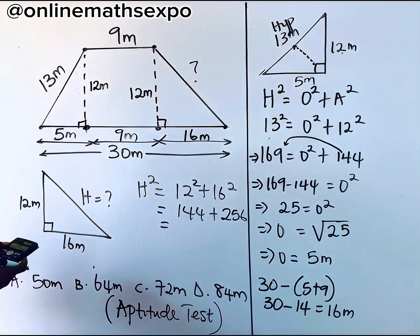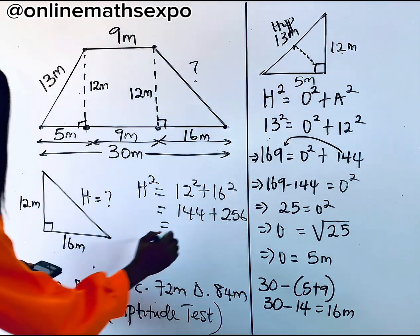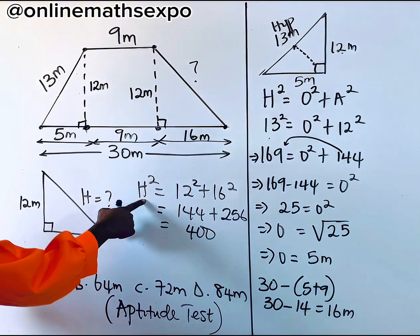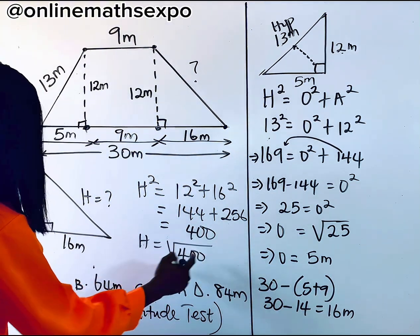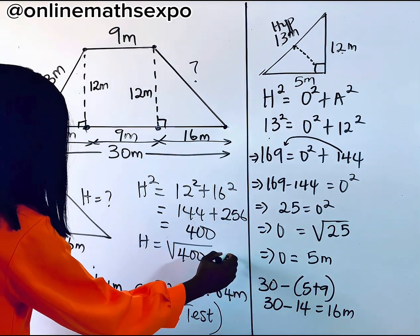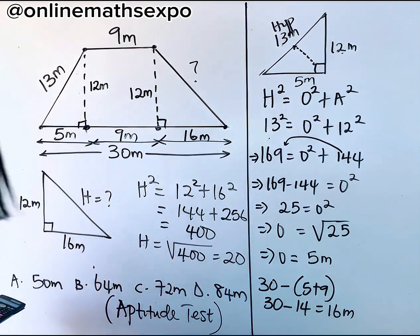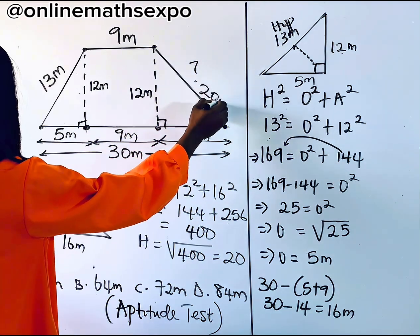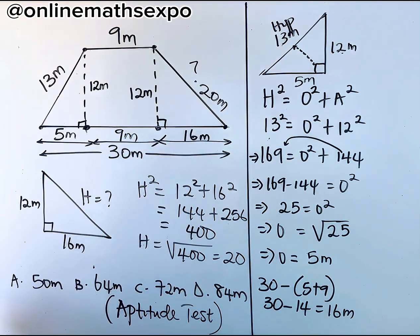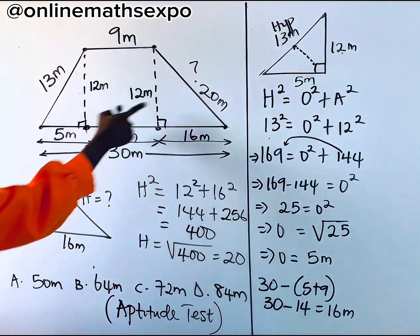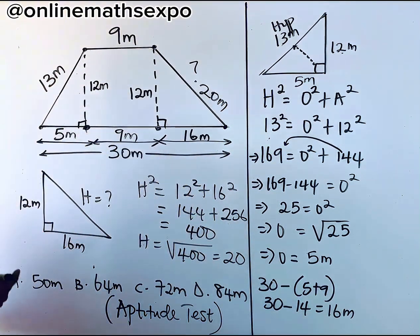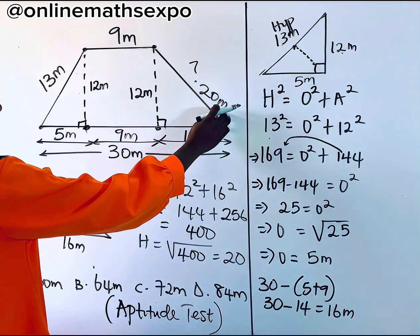So you add this up together, it gives you 400. So to get your h, like we said, take the positive route. So that will give us a square root of this gives you 20. So we have this place as 20 meters. You also observe that this length is longer than what you have here. So this is 20. This is 13. Now that you've gotten this length, you can now find the perimeter.